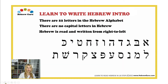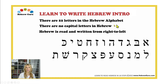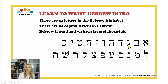I will start with a short introduction. There are 22 letters in the Hebrew alphabet. There are no capital letters in Hebrew. Hebrew is read and written from right to left. Aleph, Bet, Gimel, Dalet, Hei,